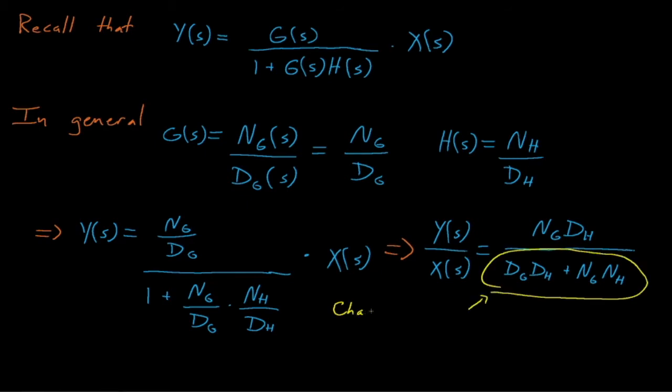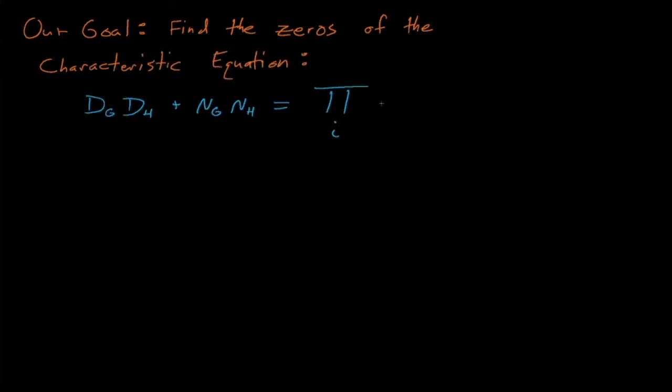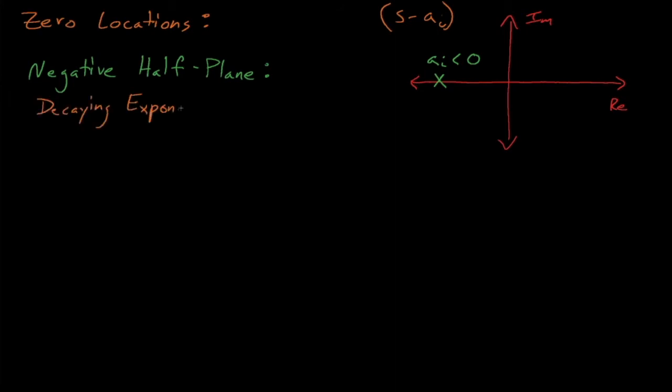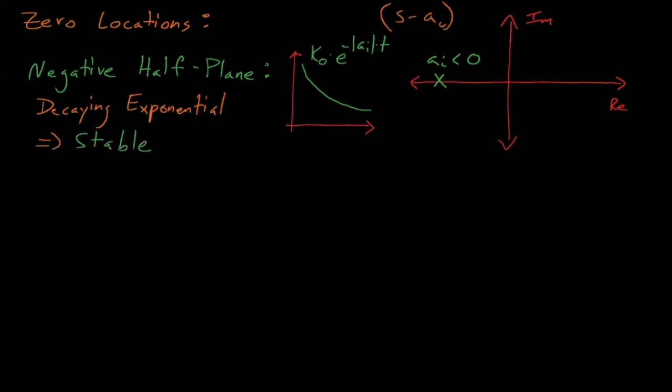So what do we know about the zeros of our characteristic equation? We'll start by looking at what happens when our zeros appear in different possible regions of the complex plane. We'll define a zero as a value of s that makes the expression s minus a sub i equal to zero, where s minus a sub i would be one of the terms that we get when we factor the characteristic equation into its individual factor components. Any zeros in the negative real half plane mean that we have a decaying exponential term e to the negative a of i times t, which means that our system's power is stable and will reduce to zero over time.